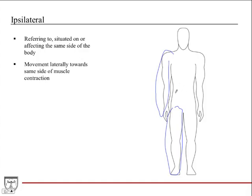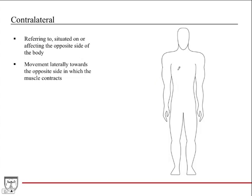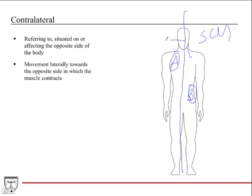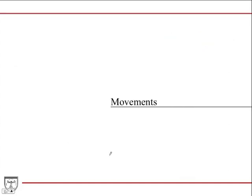Muscles that contract and cause movement to the same side of the body produce ipsilateral movement. Contralateral means the opposite side — if point B is across the midline from point A, B is contralateral to A. For example, the sternocleidomastoid muscle: when the left one contracts, it causes the head to move to the right — the contralateral side. Conversely, the right sternocleidomastoid contracts and causes the head to rotate to the left.